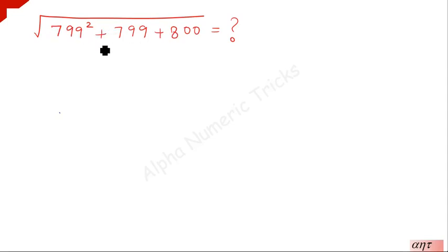Today we are going to see a nice radical problem. We are going to solve this: √(799² + 799 + 800) = ?